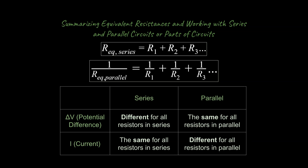To summarize: for resistors in series, add up all individual resistances to get the equivalent resistance; for parallel, use 1/R_eq = 1/R1 + 1/R2 + ... In a series circuit, potential difference is not necessarily the same across all resistors, but current is the same. In a parallel circuit, the potential difference is the same for all resistors, but current is different — the resistor with least resistance has the greatest current. Hopefully this has been helpful. If you have any comments, let me know. Take care and have a great day.